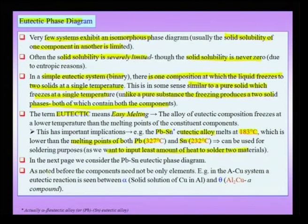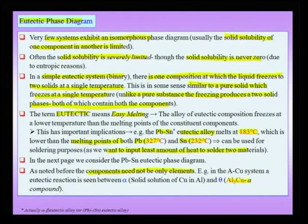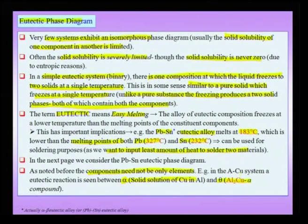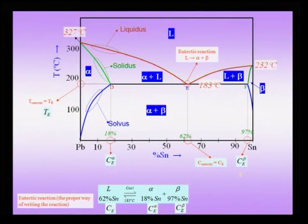Components in eutectic reactions need not only be pure elements. In the Al₂Cu system, the alpha phase — a copper solid solution of aluminum — shows a eutectic reaction with the theta phase, which is Al₂Cu. So one component is essentially aluminum solid solution and the other is Al₂Cu compound, and between this compound and this solid solution, we have a eutectic reaction. Let us start with the simple example of the lead-tin eutectic system.